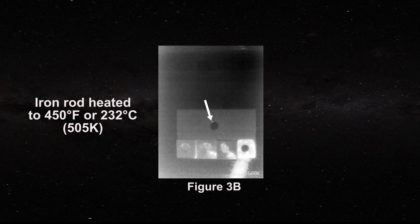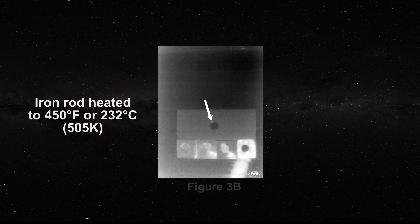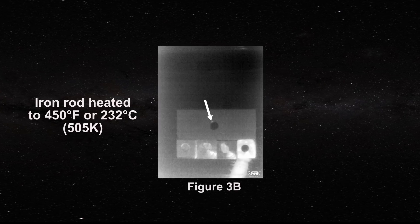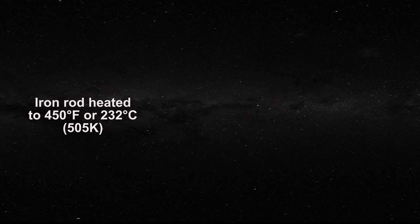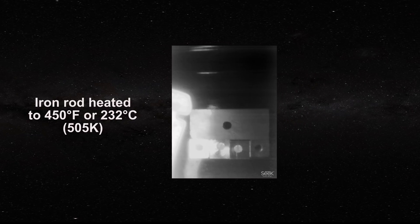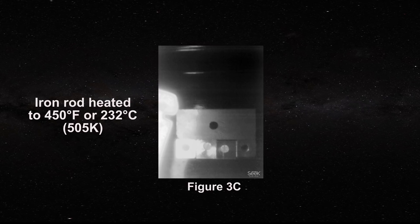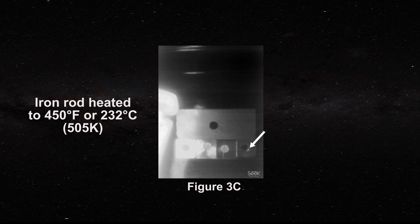However observe what is happening with the aluminum, copper and brass holes. They are immediately becoming filled with radiation from the rod. Next we move the rod to the left. Notice again that there is no effect on the graphite hole and that there is only a slight reflection observed at the top of the steel hole.